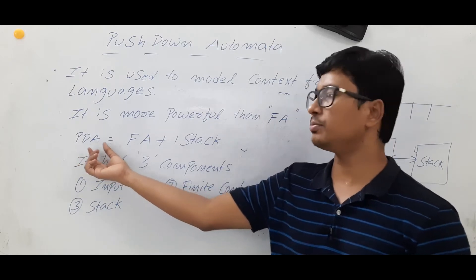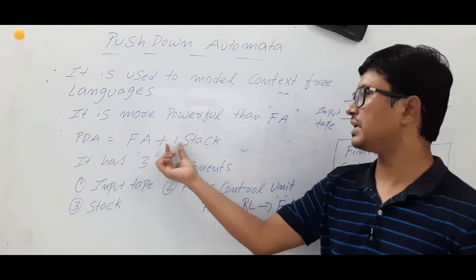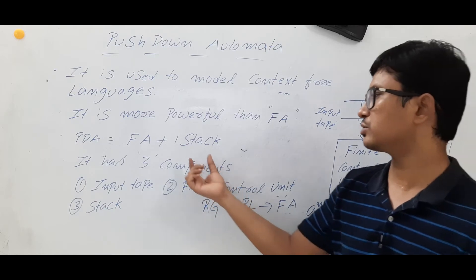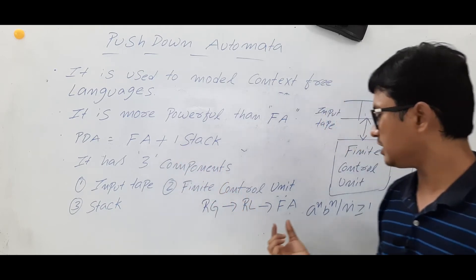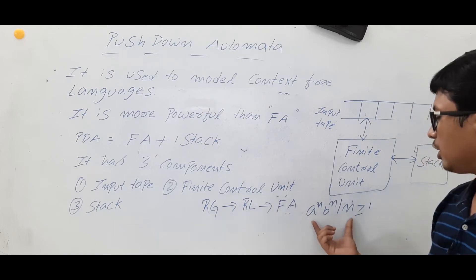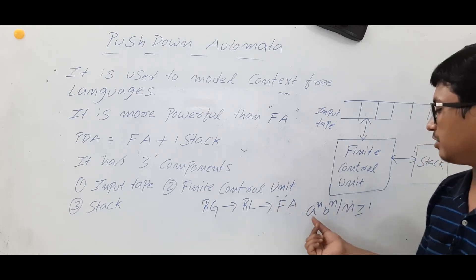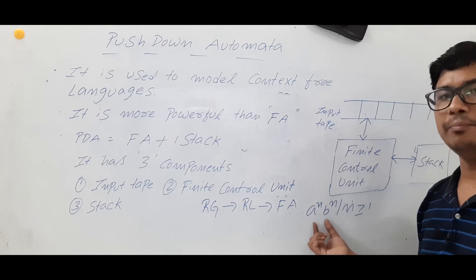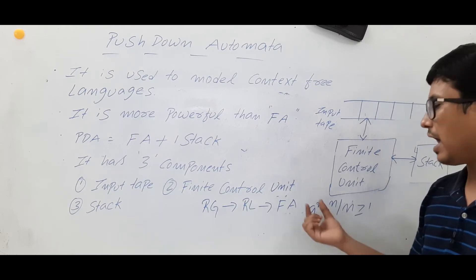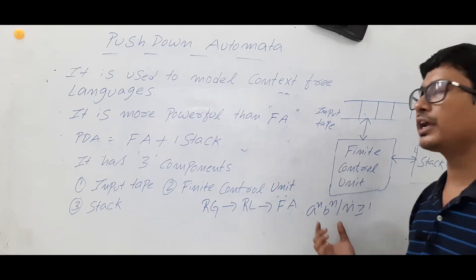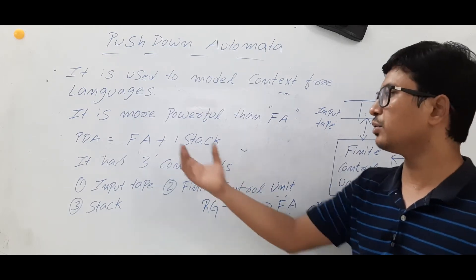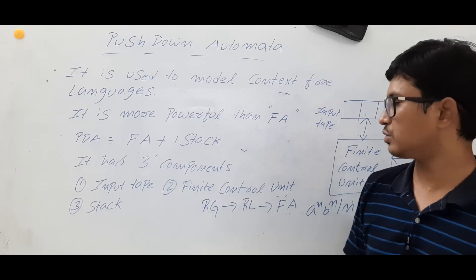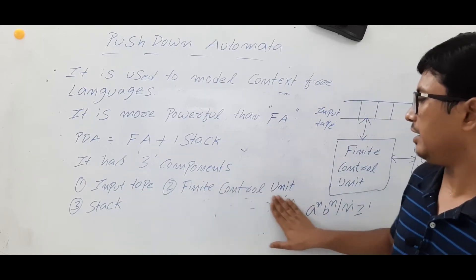Pushdown automata can be called as a finite automata plus one stack. The stack can be useful for us to store the strings — all the components — so it will act as a memory. If you see that finite automata, we don't have a memory, which is why it could not model a^n b^n. We need to count the number of A's, count the number of B's, and compare whether they are equal — finite automata cannot do all these things. However, we can do it using the pushdown automata because we have a stack.